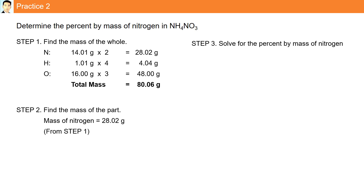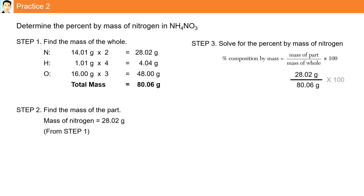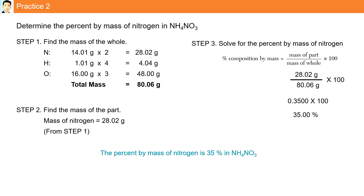Step three, we solve for the percent by mass of nitrogen using our formula. The mass of the part — nitrogen — is 28.02 grams, divided by the mass of the whole, 80.06 grams, multiplied by 100. Our final answer is 35%. The percent by mass of nitrogen is 35%.